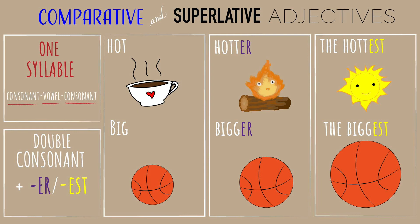For one-syllable words with a consonant-vowel-consonant pattern, we double the last consonant before we add ER or EST. For example: hot, hotter, the hottest. Big, bigger, the biggest.